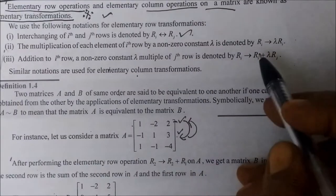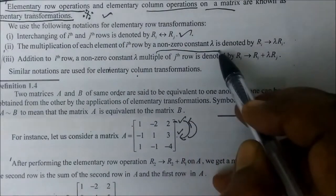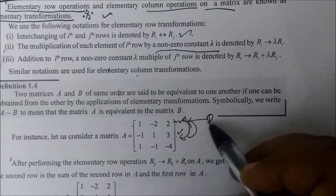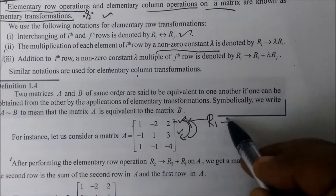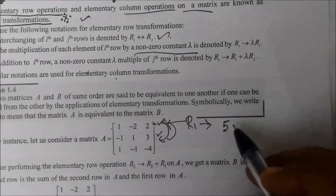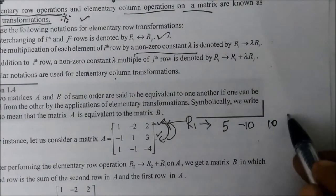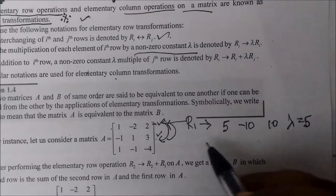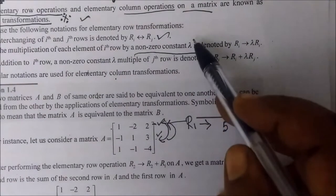The second point: multiplying a non-zero constant throughout a row or column. We use lambda for this constant. For example, if we multiply R1 by 5, then the row entries are scaled by 5. So we can multiply any row or column by a non-zero constant lambda.